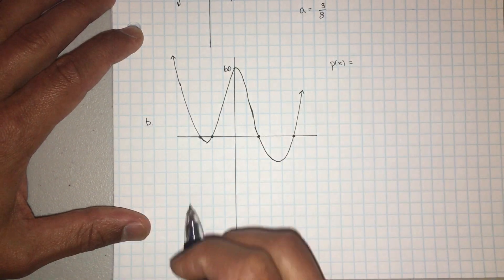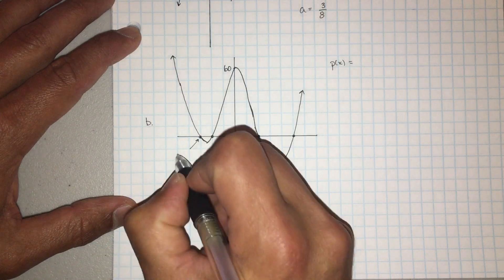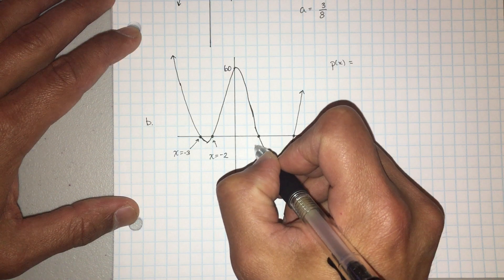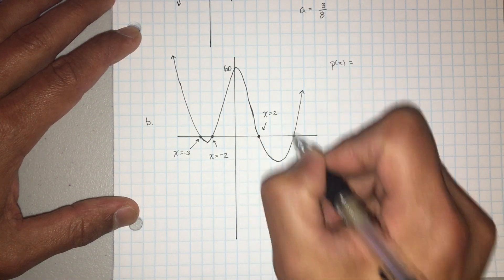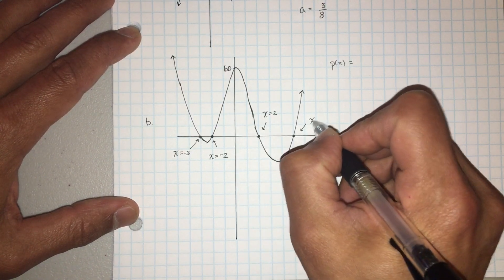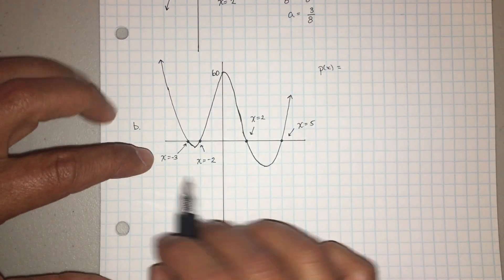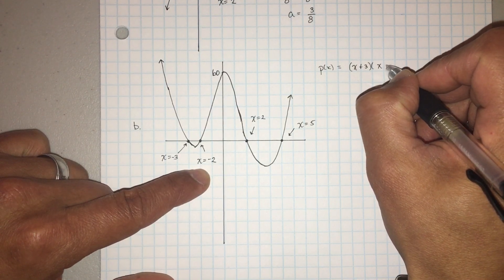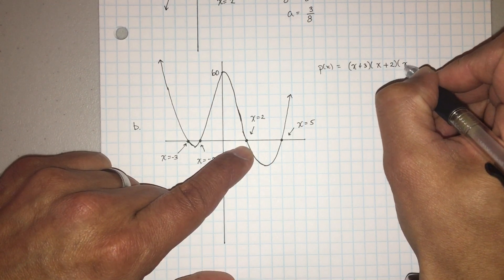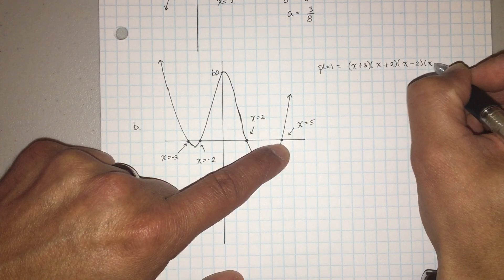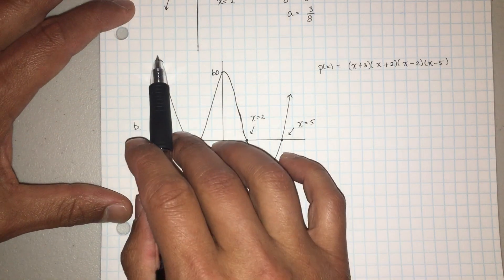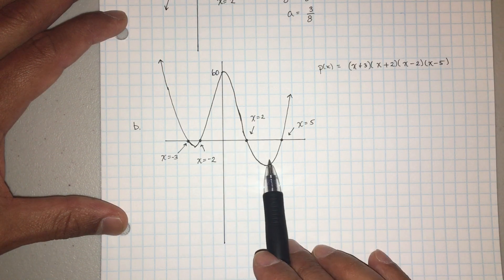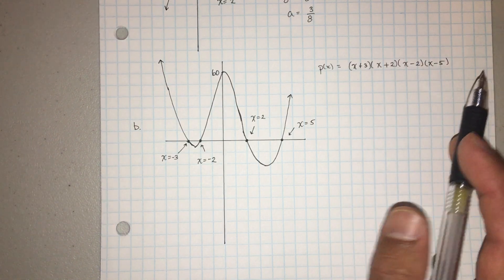Now let's look at the roots. We have x equals three, x equals negative three, x equals negative two, x equals positive two, and x equals five. So x minus three, x equals negative three becomes x plus three, x equals negative two becomes x plus two, x equals two becomes x minus two, and x equals five becomes x minus five. We should have four x's — one, two, three, four — and you see how they all cross, so they're all degree one.